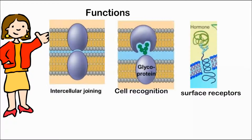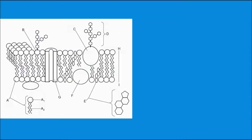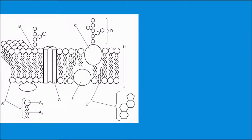Now it's review time. Let's see if you can label the diagram. We have labels A1, A2, B, C, D, E, F, G, H, and I. It's best if you take a piece of paper and try to label them yourself before seeing the answers.